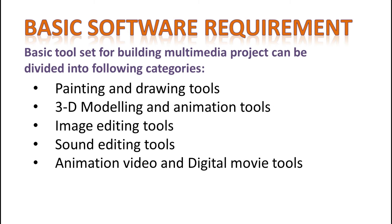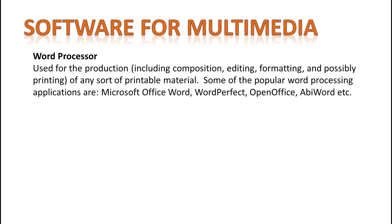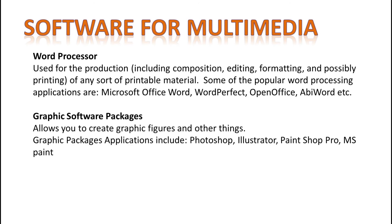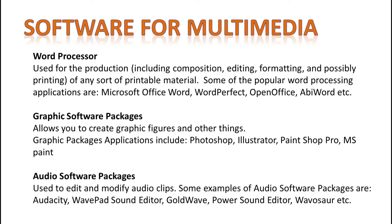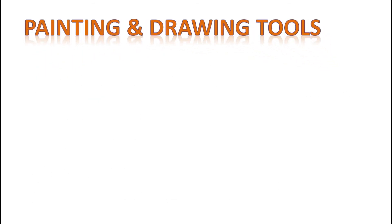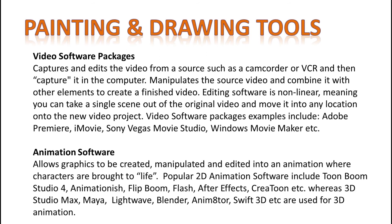Besides hardware, you also need to know about some software. Basic software tools required for building a multimedia project can be divided into the following categories: painting and drawing tools, 3D modeling and animation tools, image editing tools, sound editing tools, and animation, video, and digital movie tools. You need a word processor for composition, editing, and formatting any sort of printable material or working text. For multimedia projects, you also require graphic software packages to create graphic figures. You also need audio software packages to edit and modify audio clips. Similarly, for capturing and editing video, you will use video software packages.